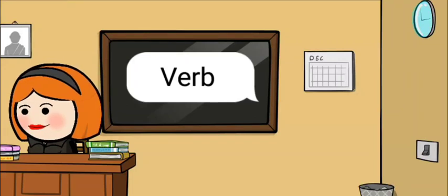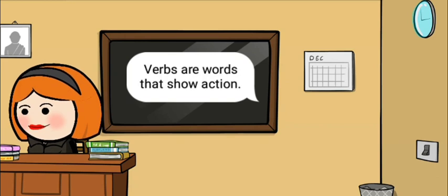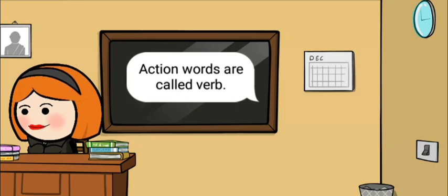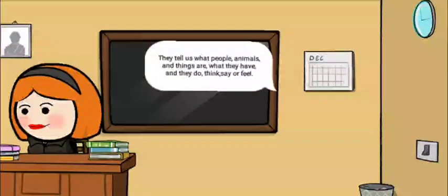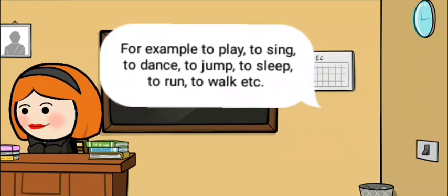Good morning children. Today we will discuss about the third part of speech: verb. Verbs are words that show action, or action words are called verbs. They tell us what people, animals and things are, what they have, and what they do, think, say or feel.